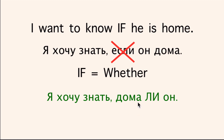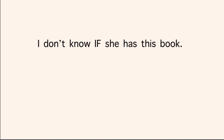Not the second word sometimes, but the second element — where the first element, in this case ДОМА, is in first place. Я хочу знать дома ли он. Let's look at more examples: 'I don't know if she has this book.'